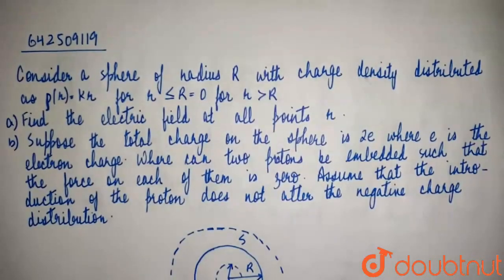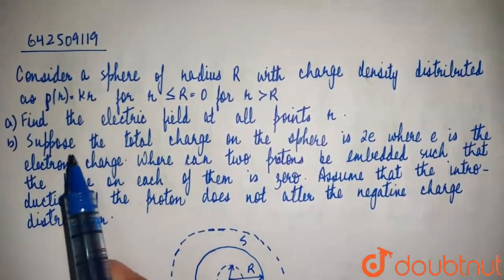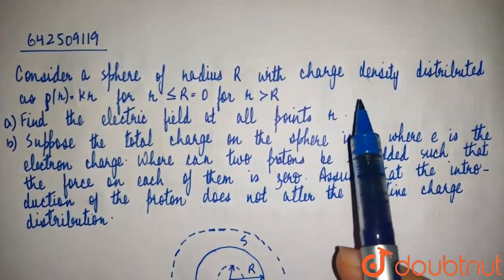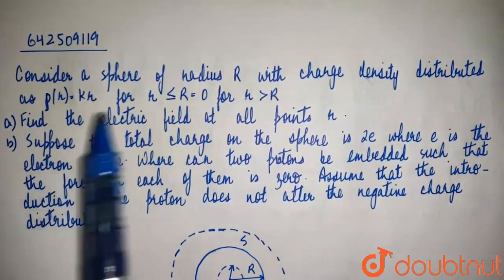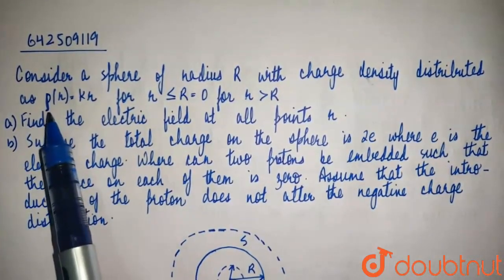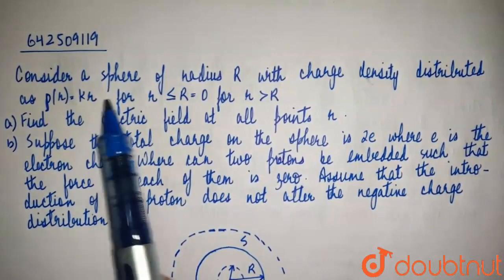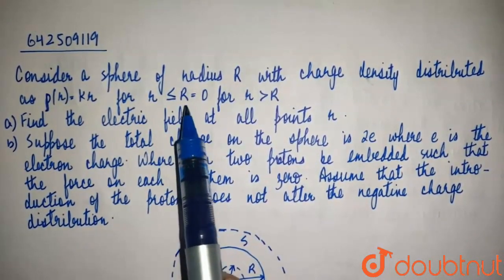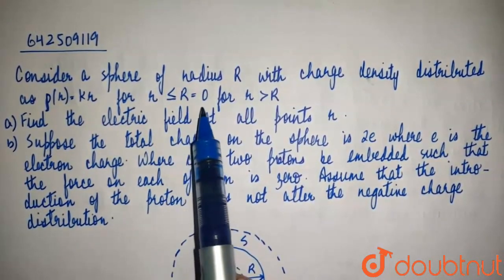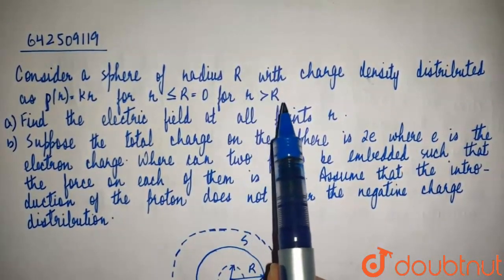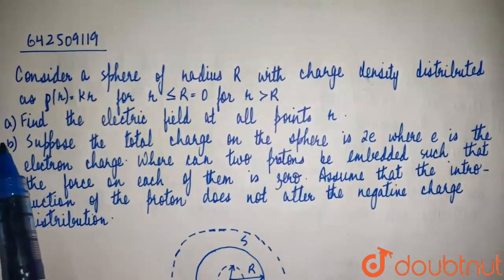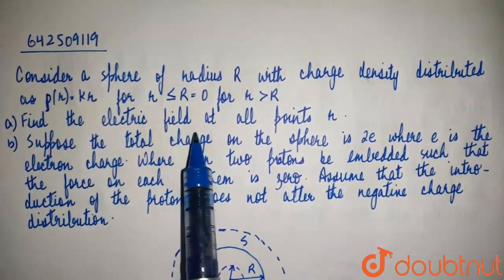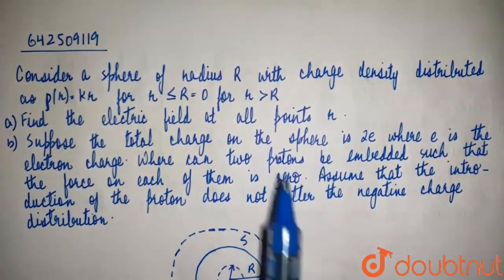The question states: consider a sphere of radius R with charge density distributed as rho as a function of r, equal to kr for r less than or equal to R, and equal to 0 for r greater than R. The first part is to find the electric field at all points r.